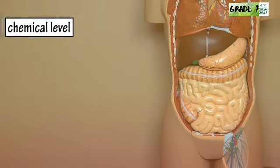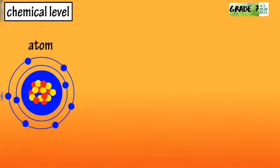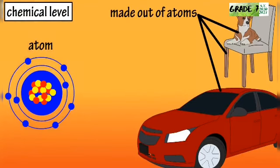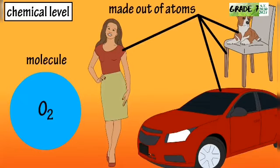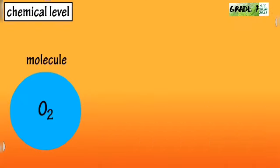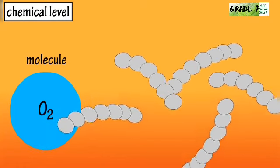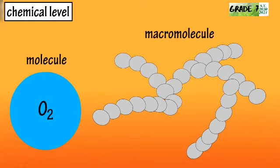The first level is the chemical level and it starts with atoms, which make up every material thing in the universe, including our bodies. Atoms can bond together to form molecules, which are larger chemical groupings, and molecules can combine with other molecules and more atoms to form macromolecules.